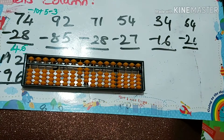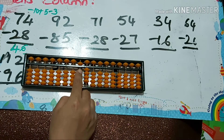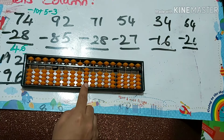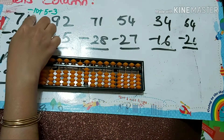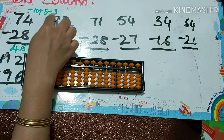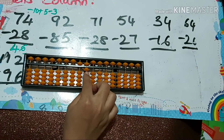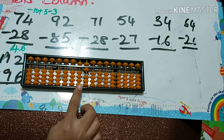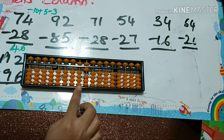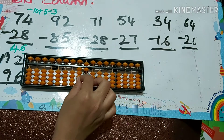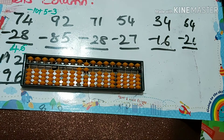Let me do the same problem one more time: 74 minus 28. Minus 2 directly. For minus 8: plus 5 minus 3, and for minus 10: minus 50 plus 40. Answer is 46.